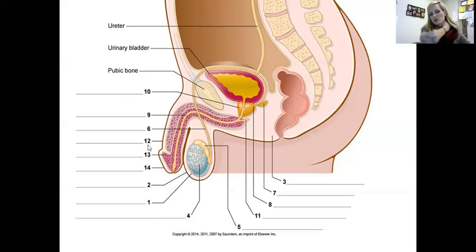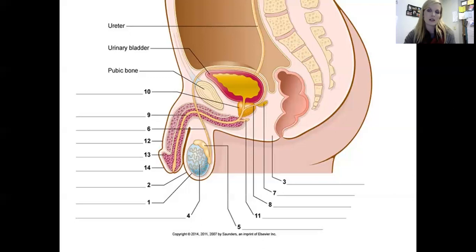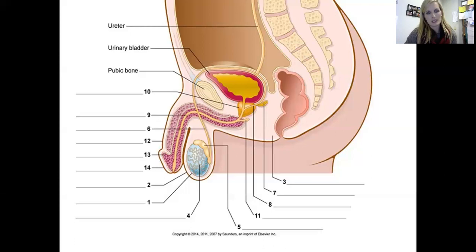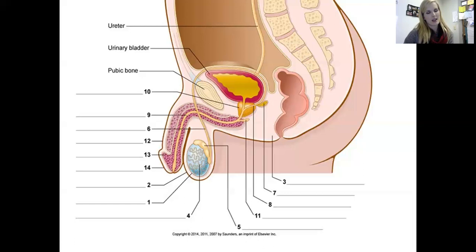Number twelve is the penis. At the tip is the glans penis — G-L-A-N-S — the sensitive erectile tissue, similar to the clitoris in the female. Number thirteen is the glans penis, stimulating arousal. Number fourteen is the foreskin, also called the prepuce — P-R-E-P-U-C-E — which is the covering at the tip of the penis. This is what's typically removed during circumcision.